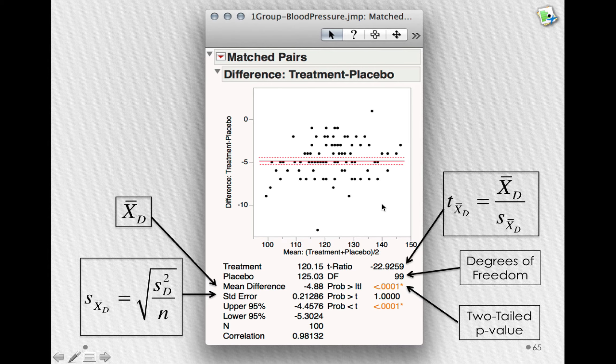This is often the case when we're looking at things like weight loss studies. Individuals who start off higher, that is, have more weight to lose, will typically get more of a difference. So what you'll typically find in situations like that is a linear pattern.